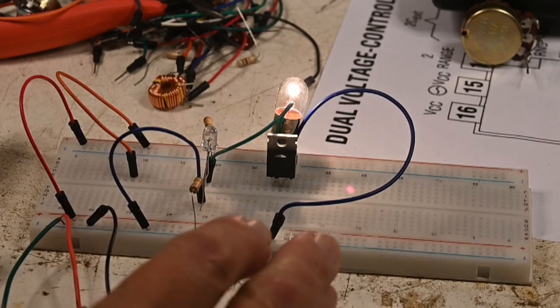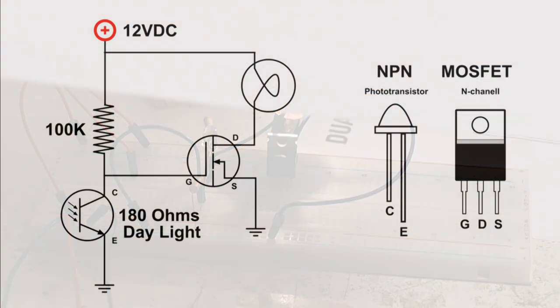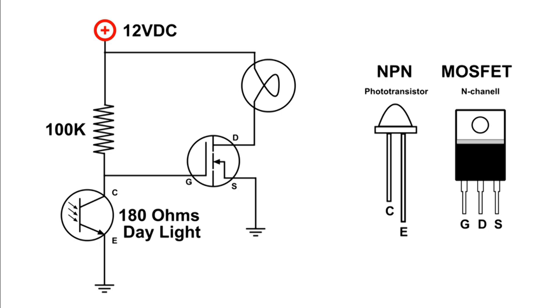And the phototransistor is basically a sensor or a photo cell and an NPN transistor. So this is, like I said, the original, this circuit right here.